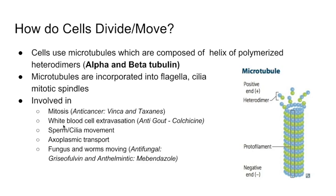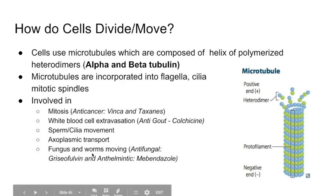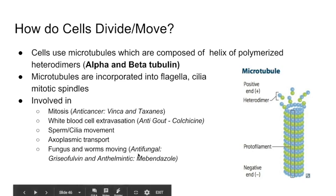Microtubules are also used for white blood cell extravasation — when white blood cells need to go to an area of inflammation. We can use this clinically with the anti-gout medication colchicine, which blocks movement of white blood cells into the area of inflammation. Microtubules are also used in sperm and cilia movement, axoplasmic transport along the axon, and fungus and worms use them to move. So we can block fungal and worm movement using antifungals like griseofulvin and anthelmintics like mebendazole.